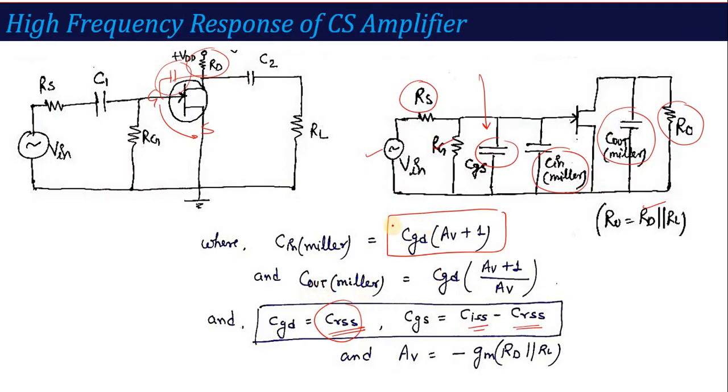If this type of two capacitances are given in the question, which I have used in the question, we have to calculate it. What is C_GD? C_GD is basically this C_RSS resistance. And C_GS is C_ISS minus C_RSS. If capacitances are directly given in this form, you will use these two formulas to calculate their values.